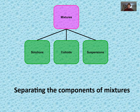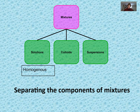Hey Falcons, Ms. Faleski here. Let's continue our conversation on mixtures, specifically how we separate the components. Mixtures fall into two major categories. A homogeneous mixture, also called a solution, has a solute dissolved in a solvent. In a homogeneous mixture you can't distinguish the parts — it looks the same throughout — and the solute particles are overall small.